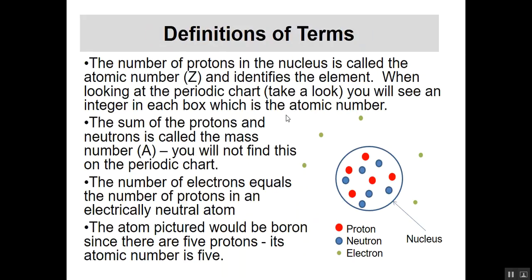The number of protons in the nucleus is called the atomic number, Z, and it identifies the element. The sum of protons and neutrons is called the mass number, A. The mass number is an integer like 1, 2, 3, 4, 5, not really a mass but it gives an idea of the mass in atomic units. You will not find that number on the periodic chart.